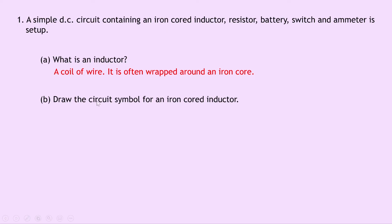Part B then says to draw the circuit symbol for an iron core inductor. Well the circuit symbol looks something like this, where you've got these squiggles which represent the coils of wire, and then the straight line which represents the iron core that the coils of wire are often wrapped around.